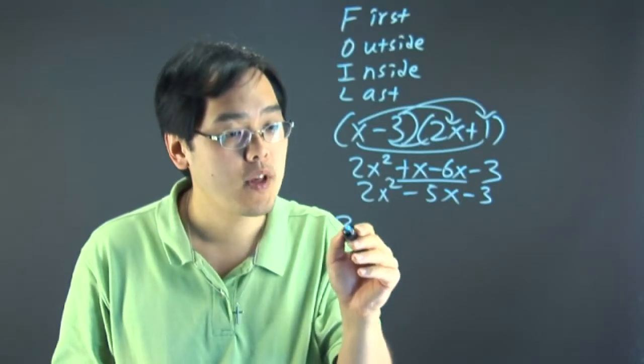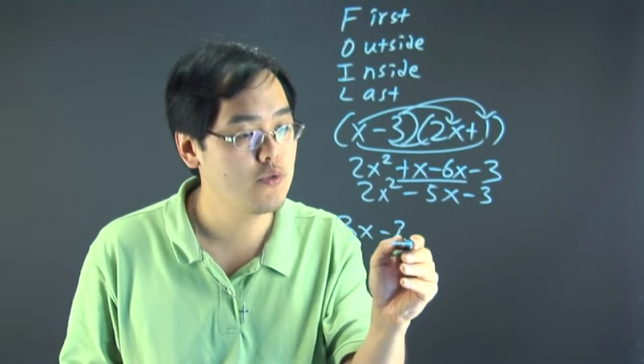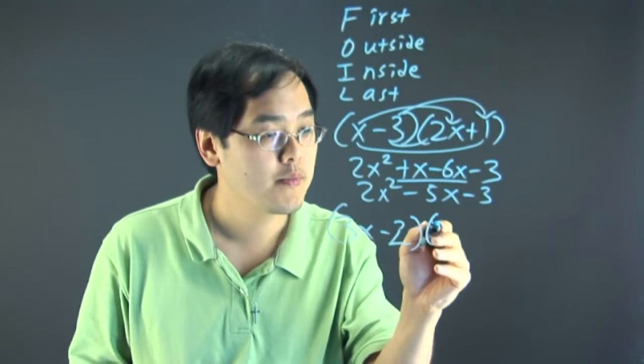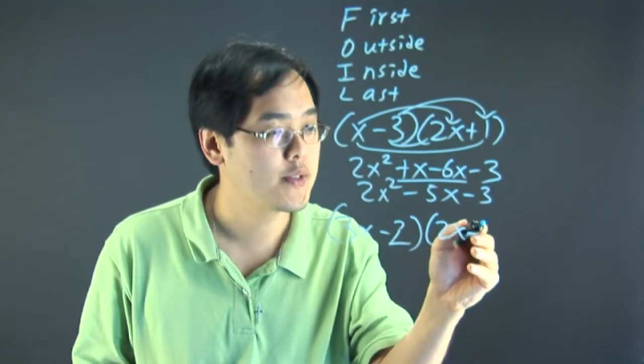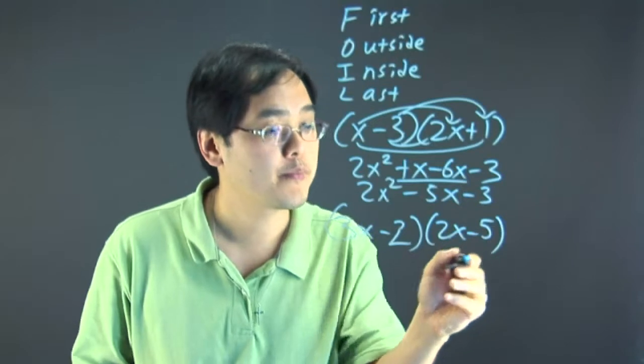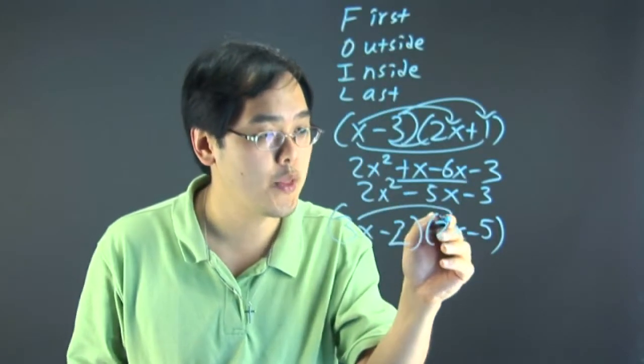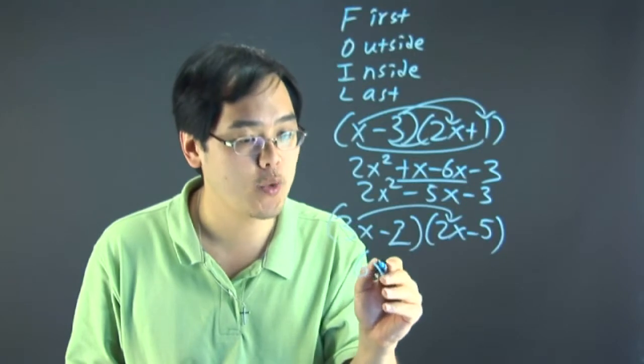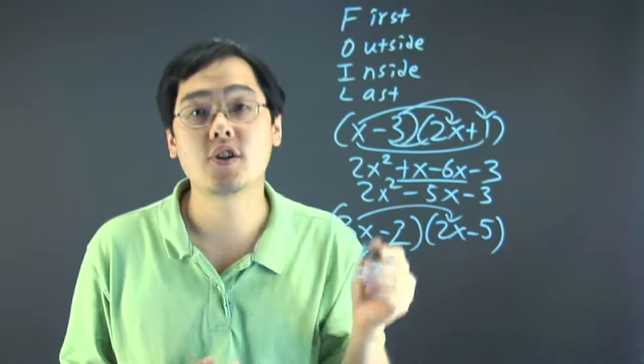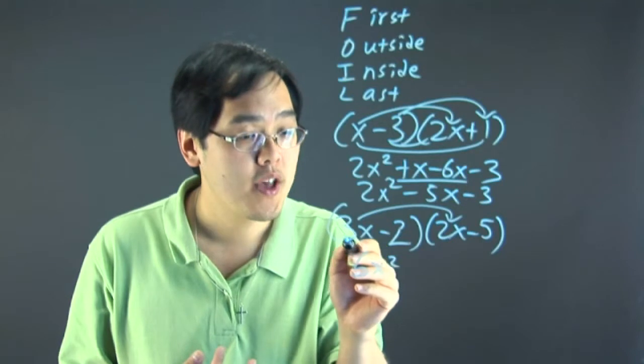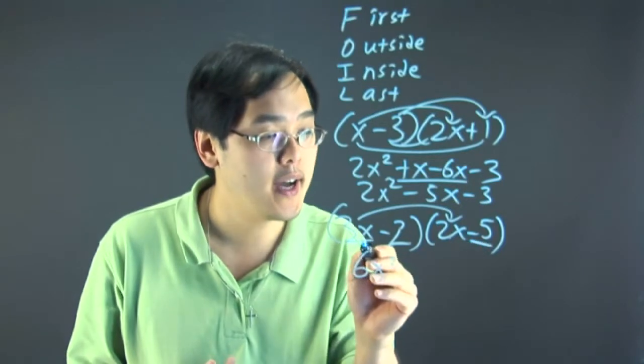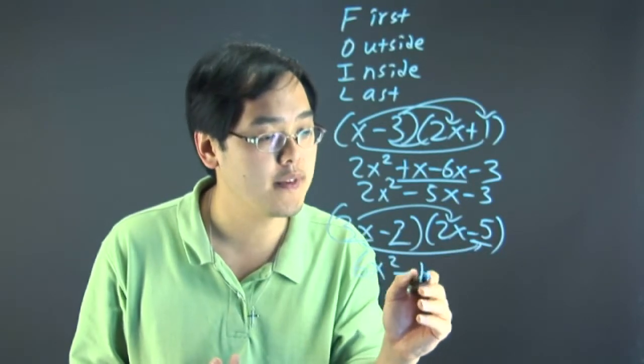Suppose you have 3x minus 2 times 2x minus 5. The first terms, you're multiplying the first terms in each parentheses. 3x times 2x is 6x squared. The outside terms, the literal outside terms of both parentheses. 3x times negative 5. You're going to multiply those two, negative 15x.